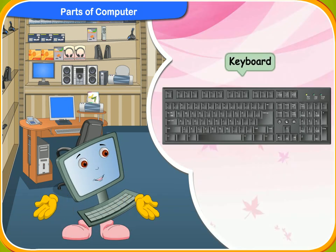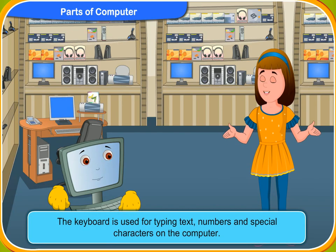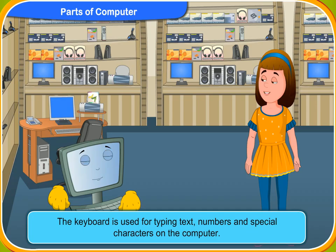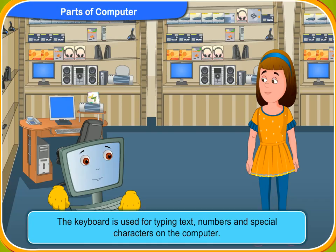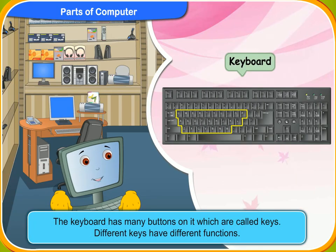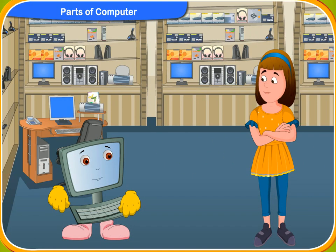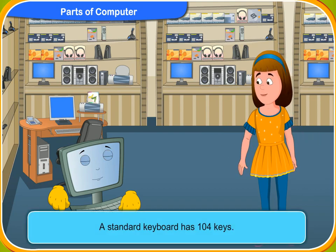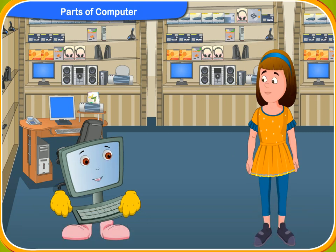And this is the keyboard. The keyboard is used for typing text, numbers and special characters on the computer. The keyboard has many buttons on it, which are called keys. Different keys have different functions. I remember that a standard keyboard has 104 keys. Very right, Rennie.